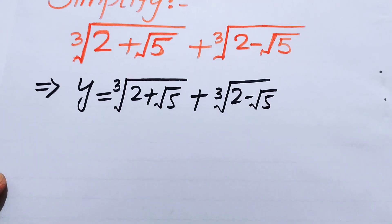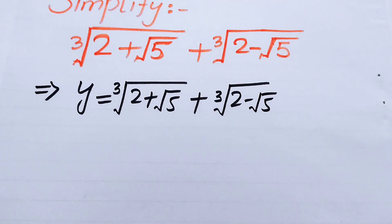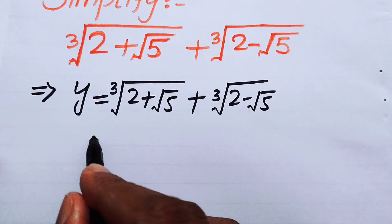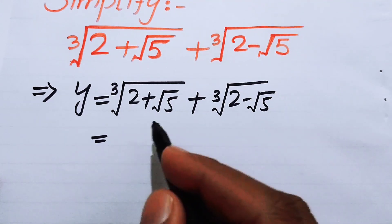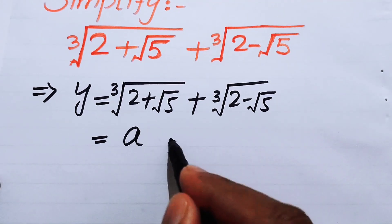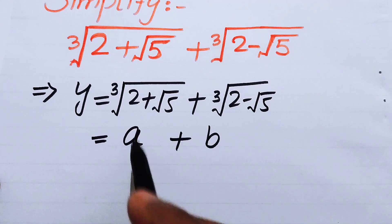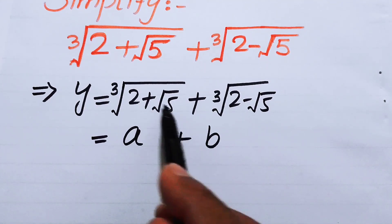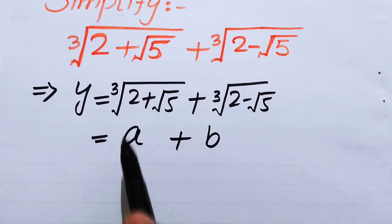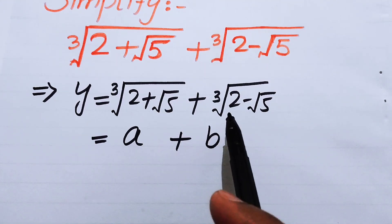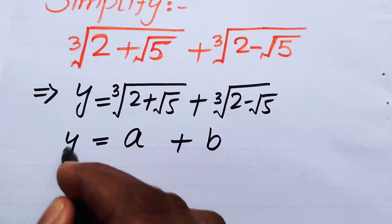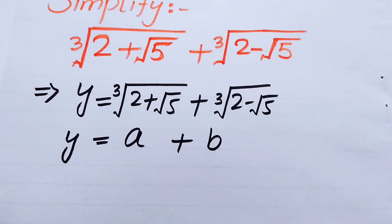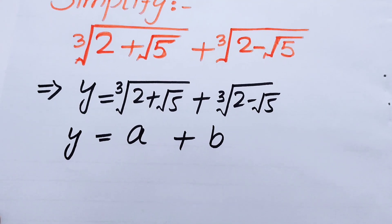We suppose the given expression equals y and take the right-hand side as a plus b. So we let a equal the cube root of (2 plus square root of 5) and b equal the cube root of (2 minus square root of 5). Therefore y equals a plus b.